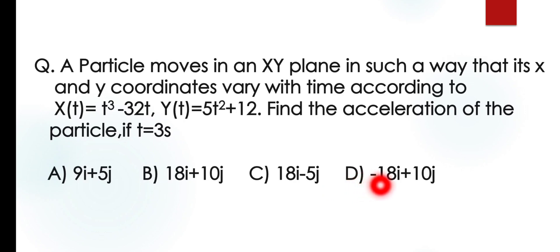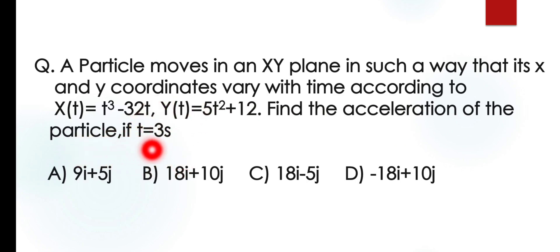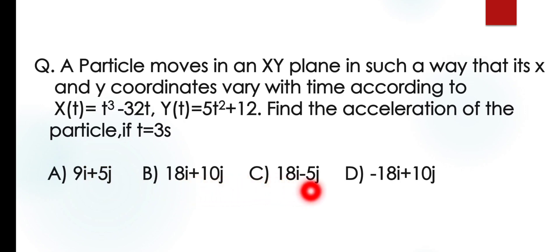This means that a particle moves in an xy plane such that x and y coordinates vary with time. So x(t) = t³ - 32t and y(t) = 5t² + 12. ہمیں acceleration find کرنی ہے particle کی if time = 3 seconds. ان میں سے کون سا option correct ہوگا؟